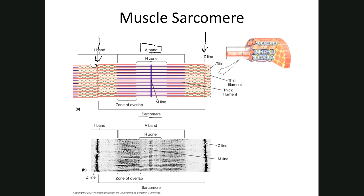The I-band (isotropic band) is the light band — it consists of actin only, the red filaments. It's less dense, so it appears light. The pattern goes dark-light-dark-light-dark-light, and that is the striations in a muscle. It has to do with the overlapping and non-overlapping of the actin and myosin myofilaments.